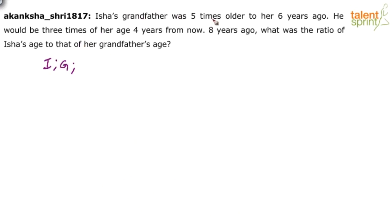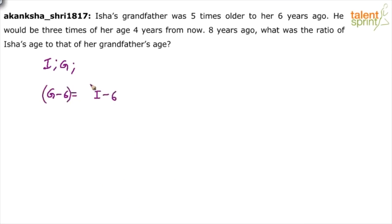Isha's grandfather was five times older than her six years ago. Their ages six years ago were G minus six and I minus six. So G minus six equals five times I minus six.